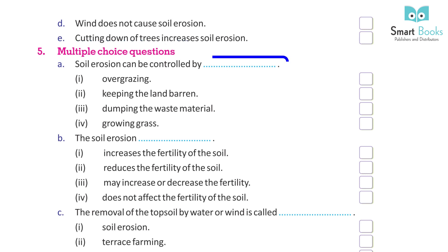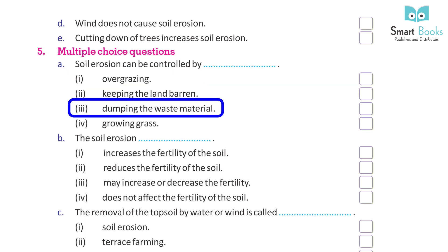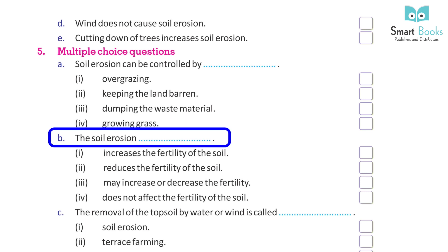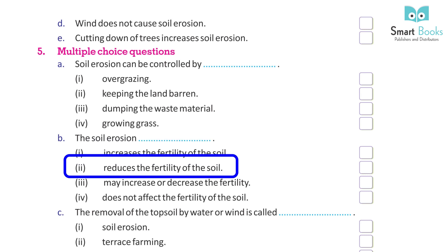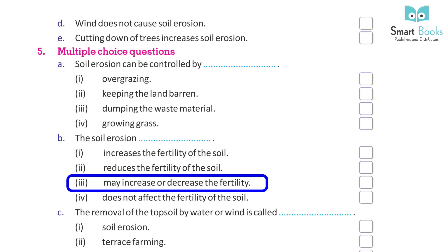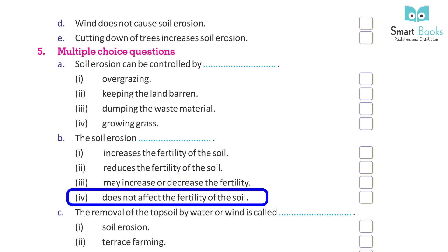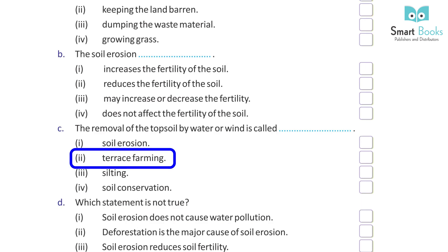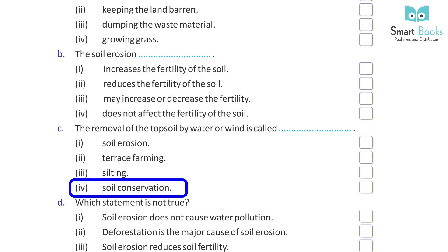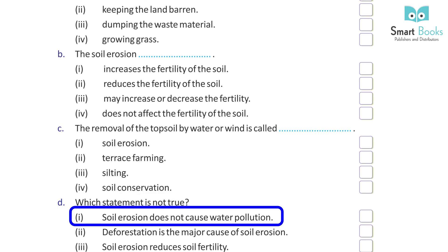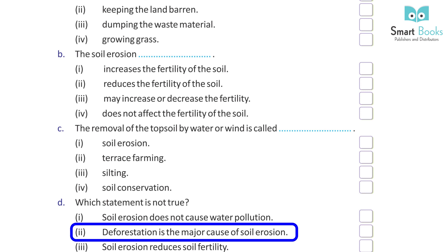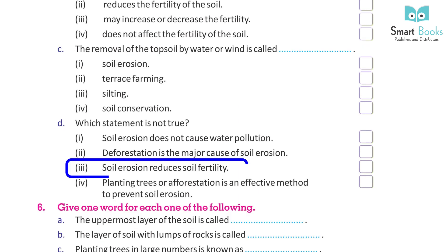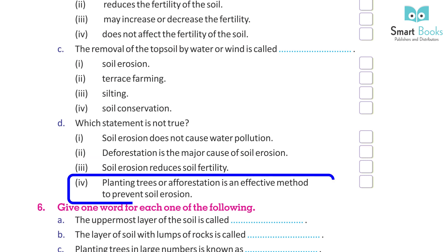Multiple choice questions: A. Soil erosion can be controlled by: 1. Overgrazing, 2. Keeping the land barren, 3. Growing grass. B. Soil erosion: 1. Increases the fertility of the soil, 2. Reduces the fertility of the soil, 3. May increase or decrease the fertility, 4. Does not affect the fertility. C. The removal of the topsoil by water or wind is called: 1. Soil erosion, 2. Terrace farming, 3. Silting, 4. Soil conservation. D. Which statement is not true? 1. Soil erosion does not cause water pollution, 2. Deforestation is the major cause of soil erosion, 3. Soil erosion reduces soil fertility, 4. Planting trees or afforestation is an effective method to prevent soil erosion.